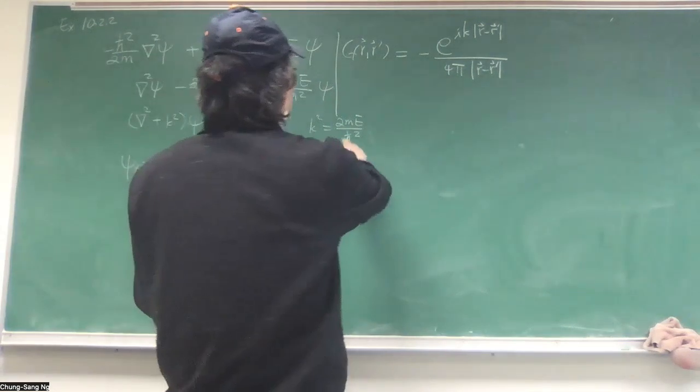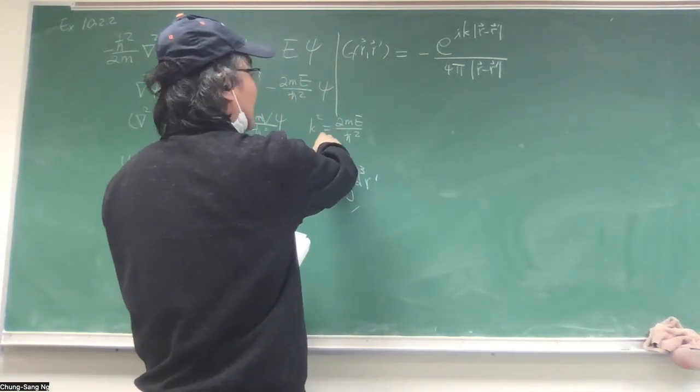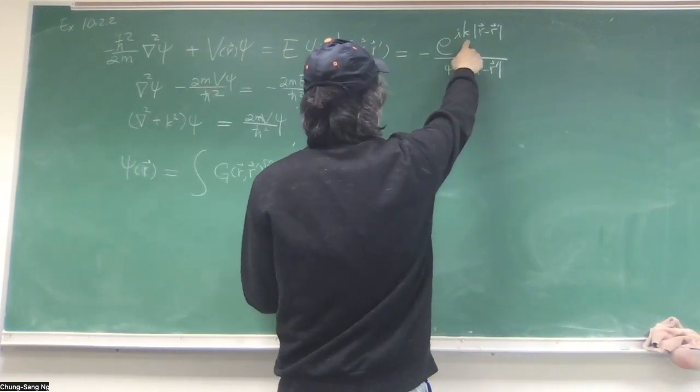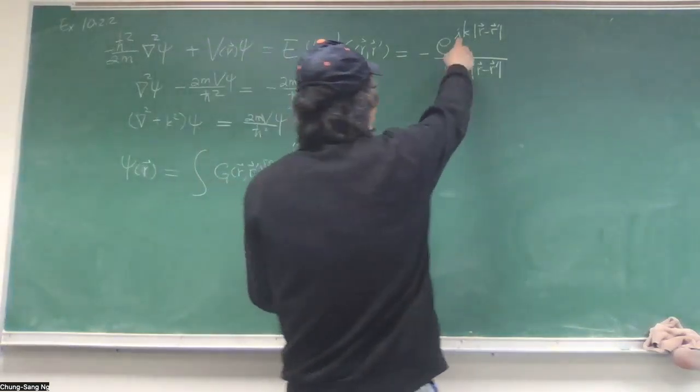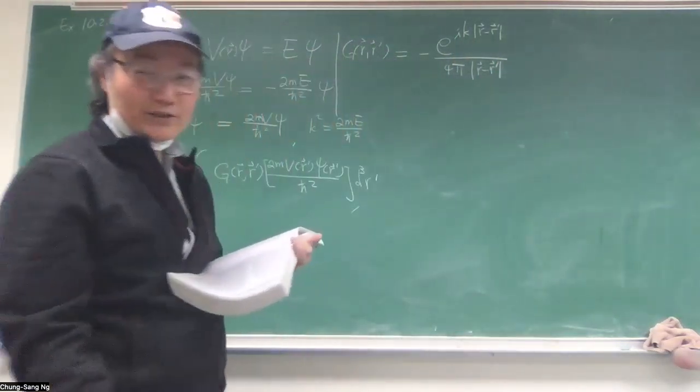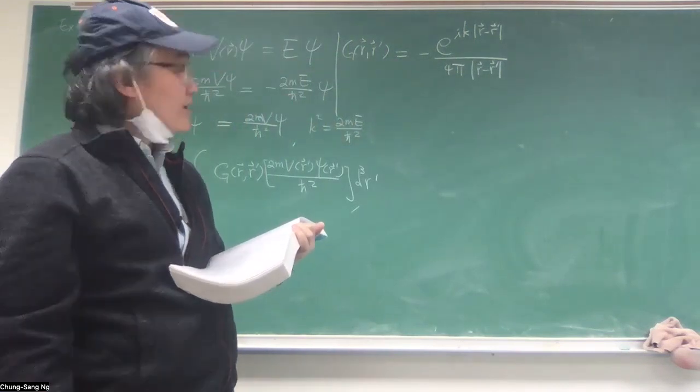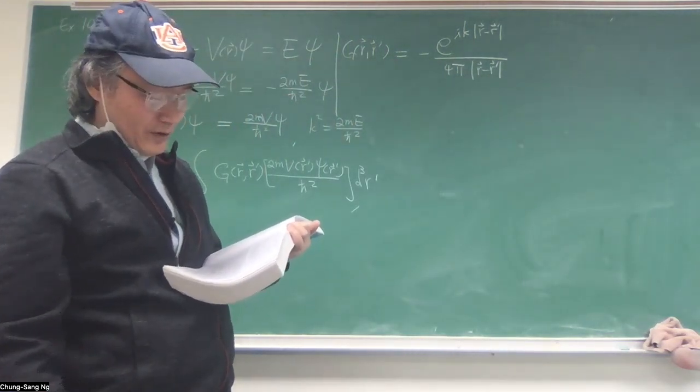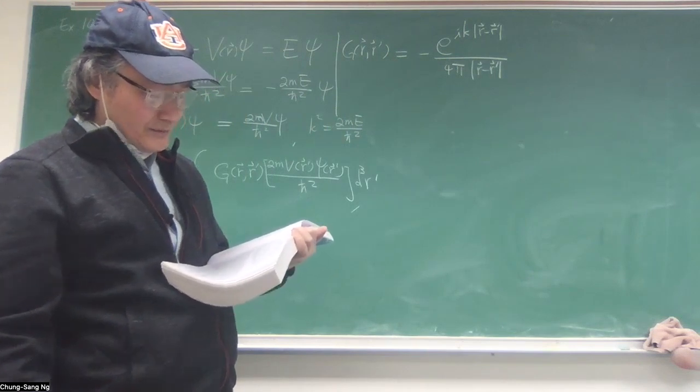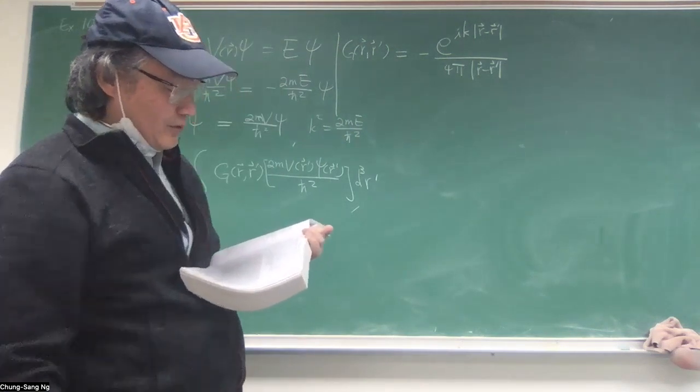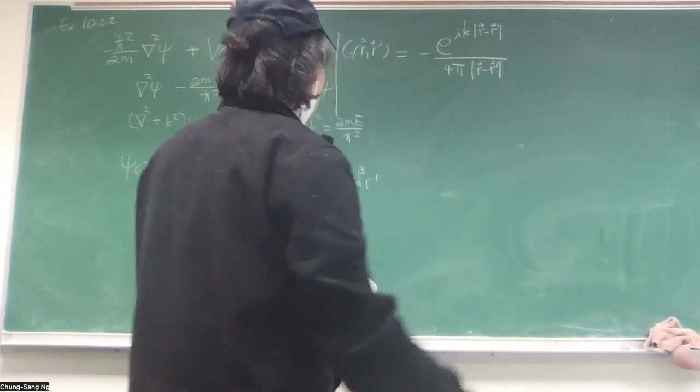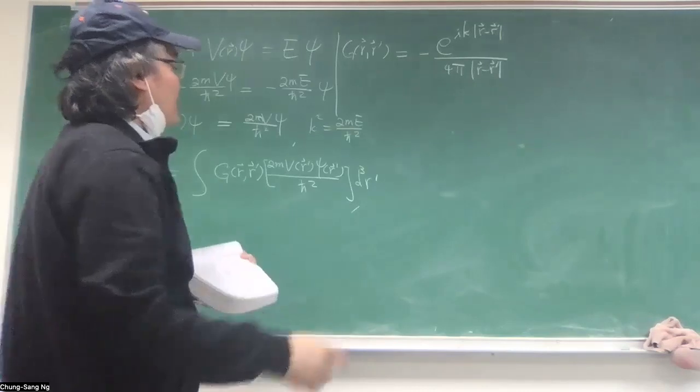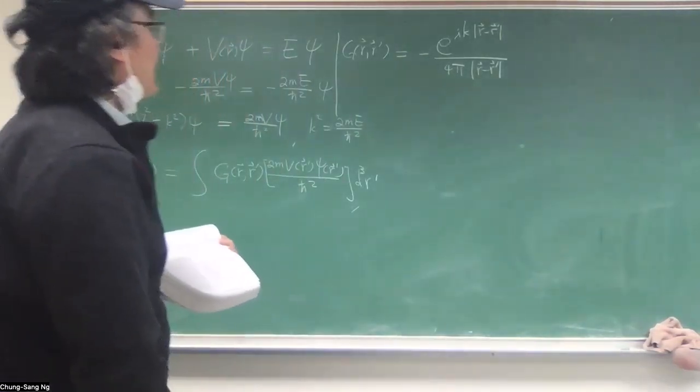Now, there's a subtlety that k has to be real and cannot be imaginary. You can see from here, if it is imaginary, then you have i here, i times i is i or minus i, so you have a plus or minus exponential term, and you need to be careful not to check the plus term. Otherwise, it will go up when the integration, so that becomes what we call the modified Helmholtz operation.